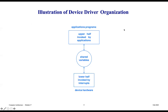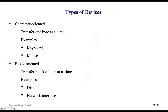Here's what it looks like. There's a hardware-facing portion, an application-facing portion, and shared variables with translation between the two. The application program interfaces with the upper half, which is invoked by the application. The device hardware side uses the lower half, which is invoked by interrupts, and it knows exactly how to share information with the hardware in the right format.